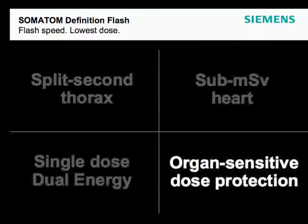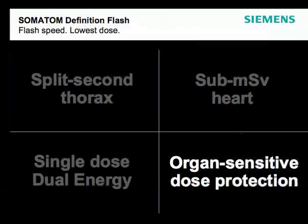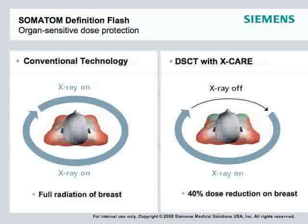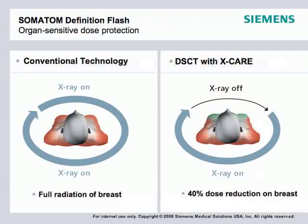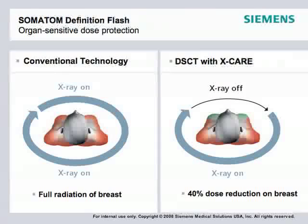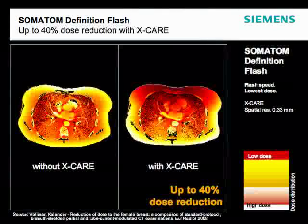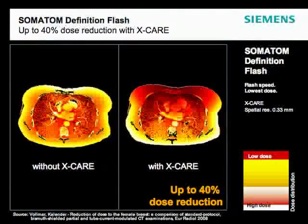Organ-sensitive dose protection is the final key segment. It's important to save dose to sensitive organs including breasts, lens of the eye, thyroid, and gonads. The scanner automatically identifies the scan range, and through selective beam positioning you can reduce dose to specific organs — up to 40% dose reduction in the breast region, for example. Using X-Care with partial scan segments through rotation, dose to specific organs can be turned off. A peer-reviewed article has already been published on this topic.